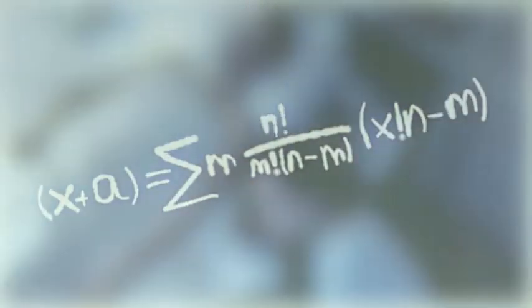Формула для разложения на отдельные слагаемые целой неотрицательной степени двух переменных, имеющая вид: (a + b)^n = C(n,0)·a^n + C(n,1)·a^(n-1)·... (The formula for expanding into individual terms the whole non-negative power of two variables, of the form: (a+b)^n equals C(n,0) times a^n plus C(n,1)...)